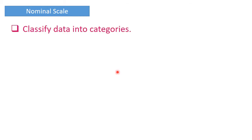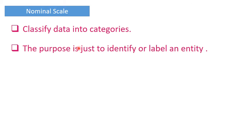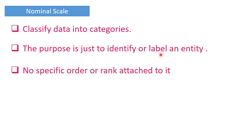First we will look into nominal scale. It classifies data into categories. The purpose is just to identify or label an entity — no specific order or rank is attached to it.